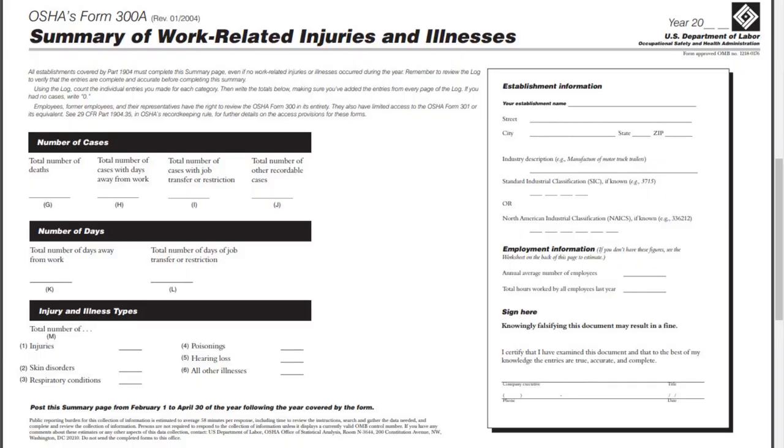Once the supervisor is notified, their job is to go ahead and document it and have everybody fill out the proper forms. The first thing they do is fill out Form 301, and then they go to Form 300 and log it there. You also have another form — the 300A.